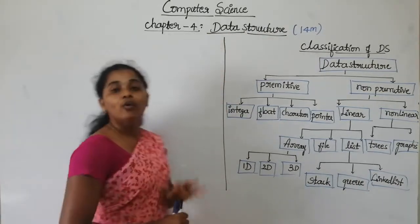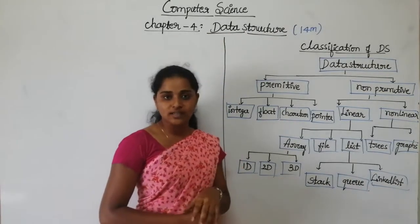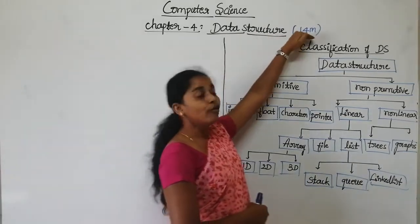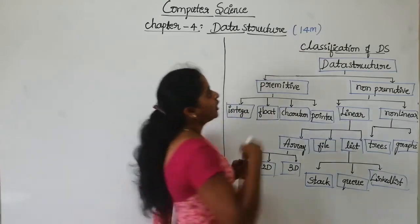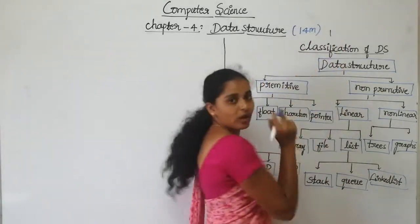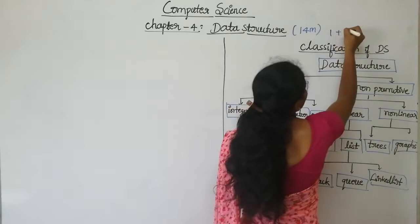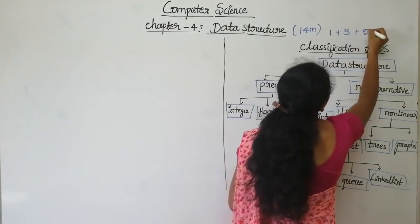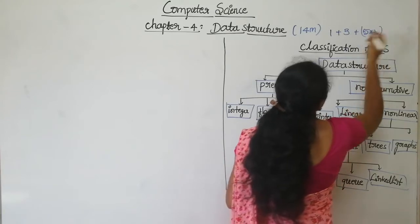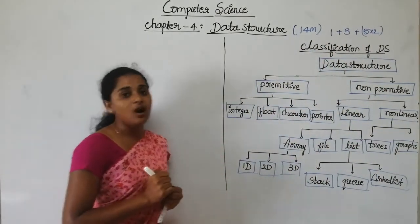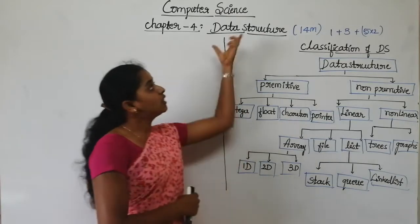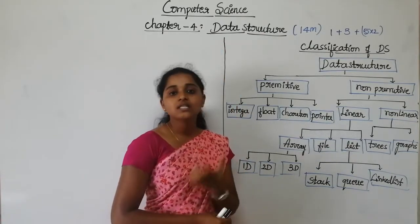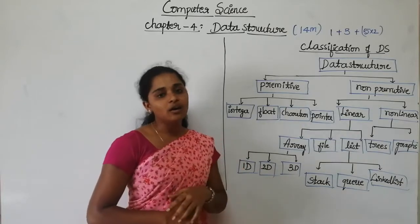This is the fourth chapter according to your syllabus. In this particular chapter, they are asking a 14 marks question in your examination — one question in the one mark section, one question in the three mark section, and two questions in the five marks section. So totally they are asking 14 marks worth of questions. This chapter is important and a high-weightage chapter for your examination.